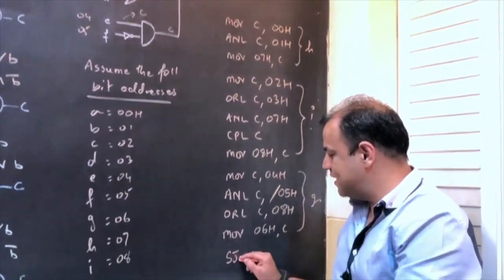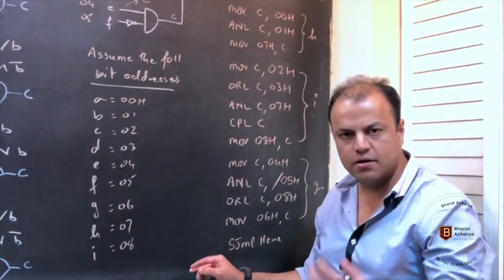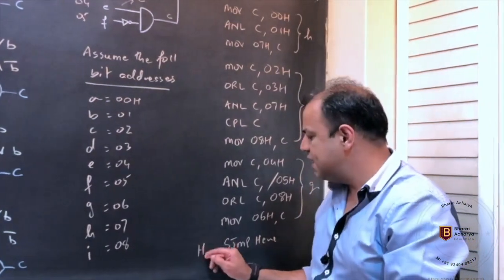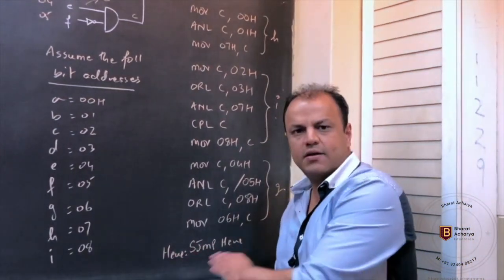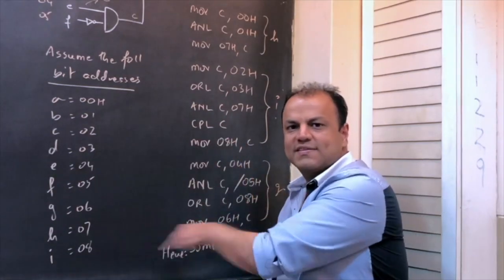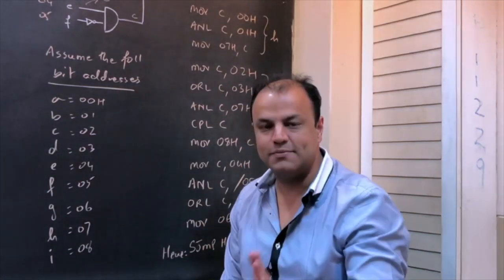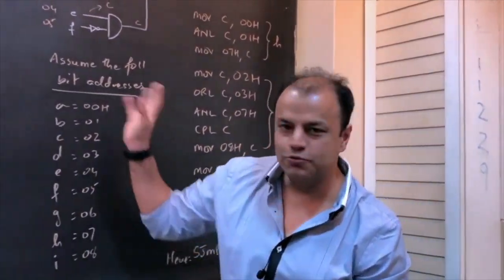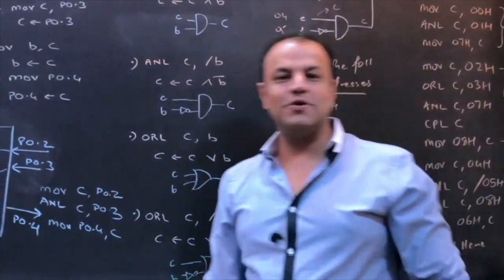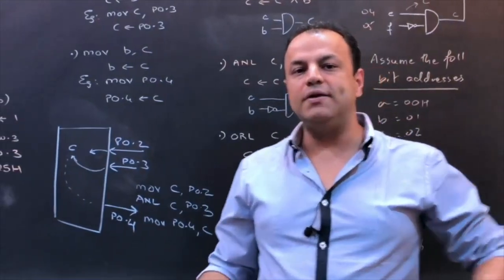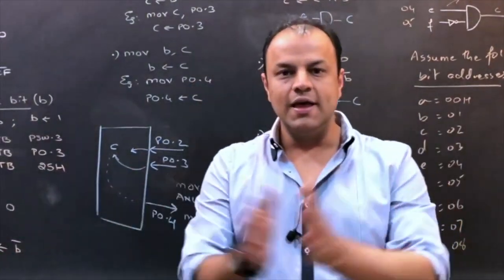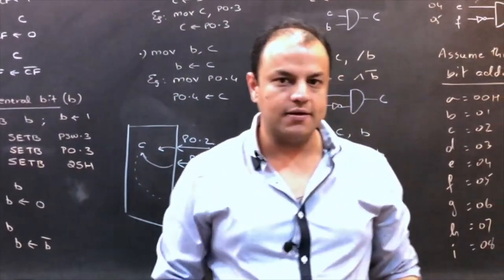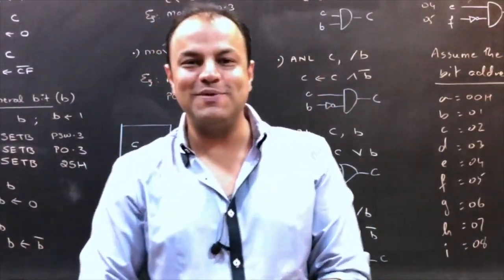To end a program, you write SJMP here, or you can write return or halt if using an assembler directive. That's the end of the program. So this is the use of these logic instructions — all bit operations, also called Boolean operations of 8051. This is the last group of the 8051 instruction set. I hope you understood it. Wish you all the best.